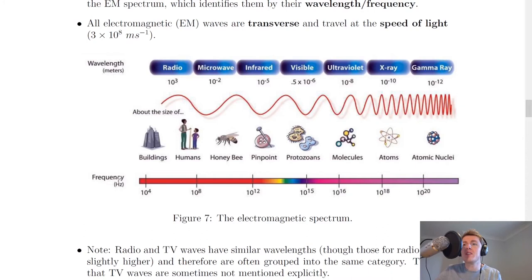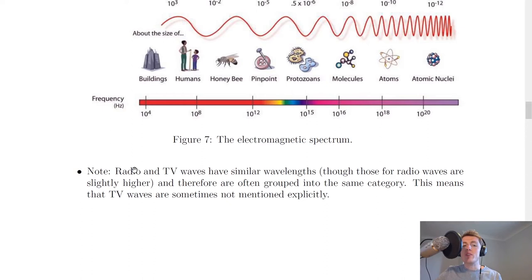So it's useful to think as wavelength and frequency as almost being opposites in a sense. So if you've got a big wavelength, that means you've got a small frequency. Or if you've got a big frequency, that means you've got a small wavelength.